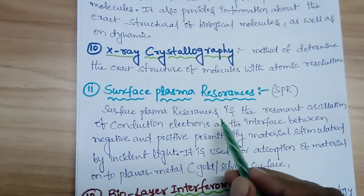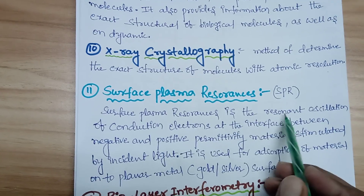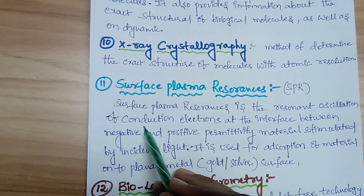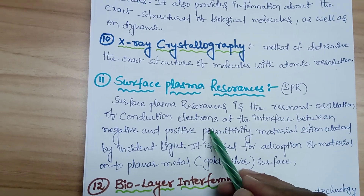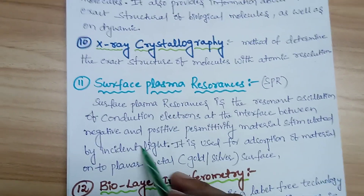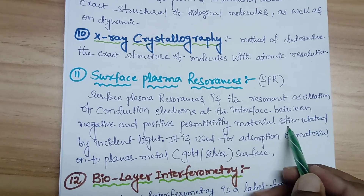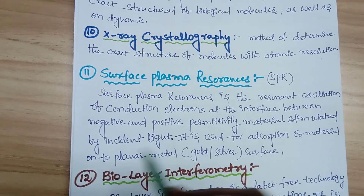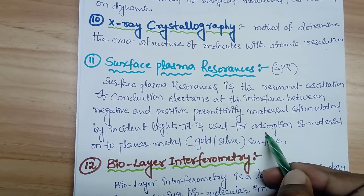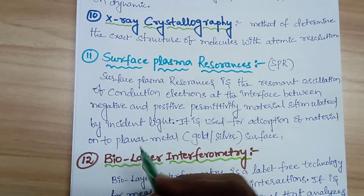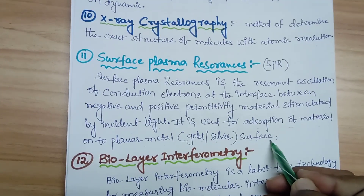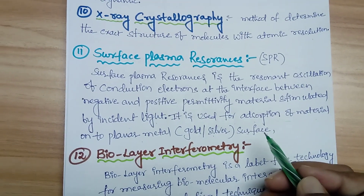Surface Plasmon Resonance spectroscopy is the resonant oscillation of conduction electrons at an interface between a negative and positive permittivity material, stimulated by incident light. It is used for the adsorption of materials to planar metal surfaces such as gold and silver.